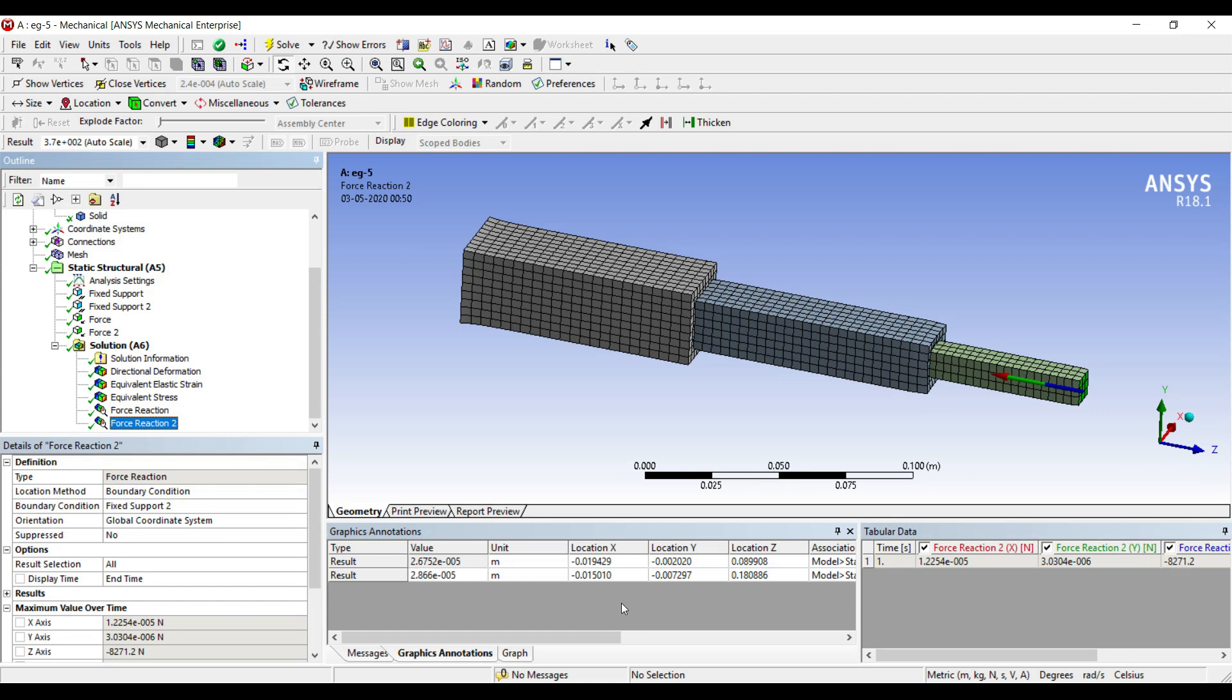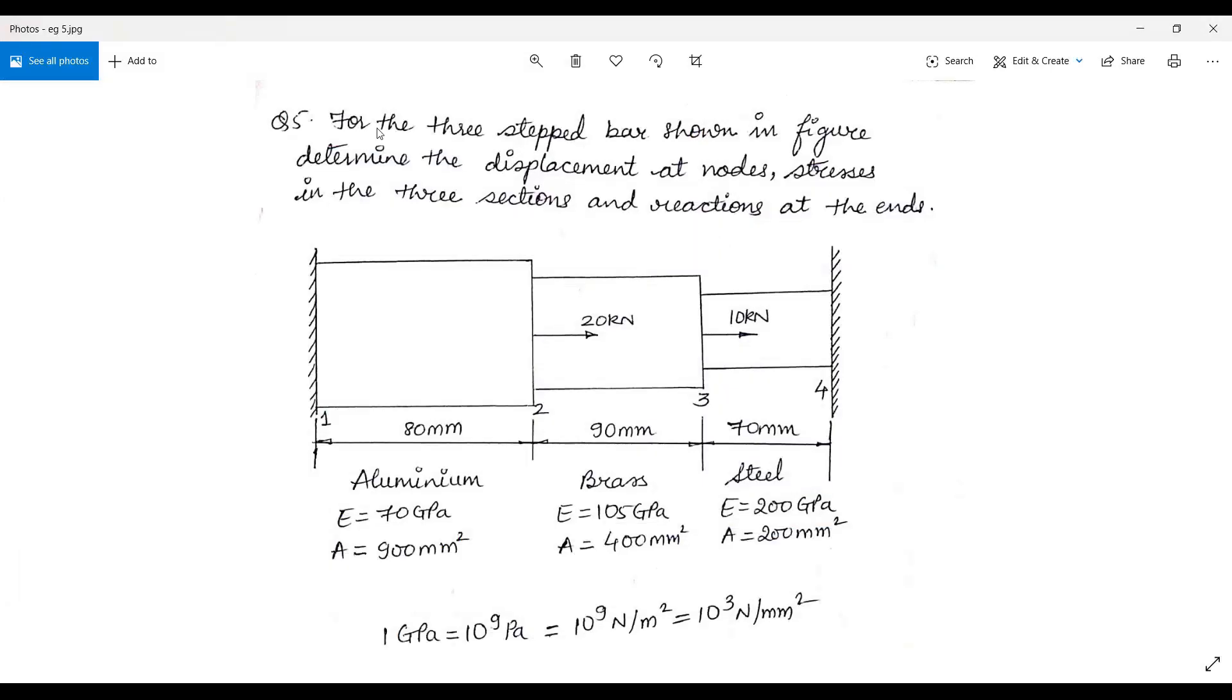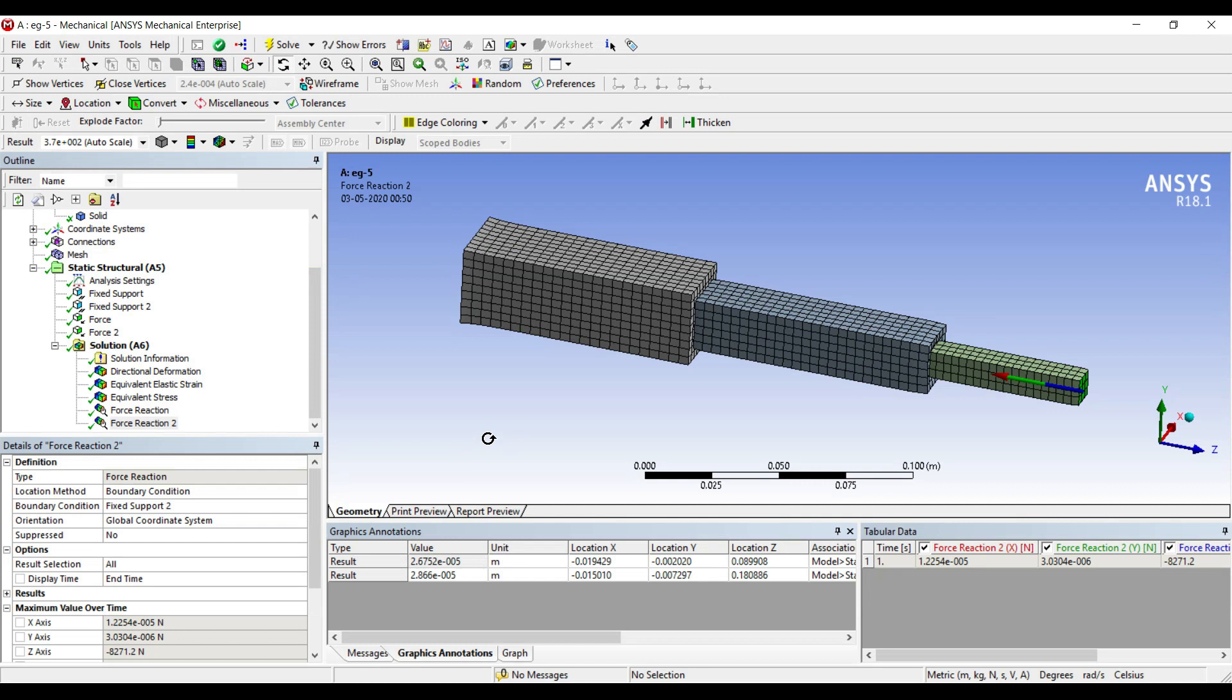So these are the things which are asked: displacement at nodes, stresses. I have also calculated the strain extra and the reaction at the ends. So this is how you solve the numerical using ANSYS.